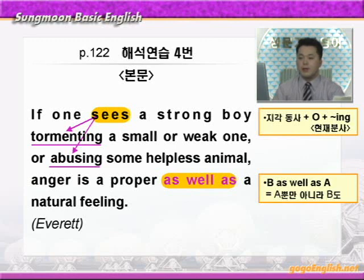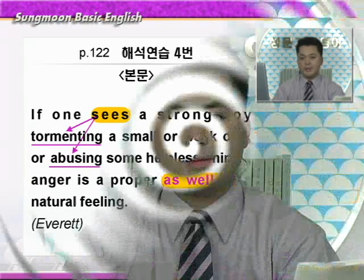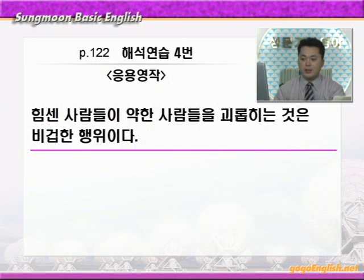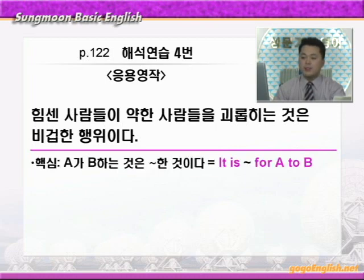정리해보죠. 힘센 소년이 작거나 약한 소년을 괴롭히거나 혹은 어떤 무기력한 동물을 학대하는 것을 보면, 분노가 일어나는데 그것은 당연할 뿐만 아니라 올바른 감정이다 — 이런 말이 되겠습니다. 그럼 응용영작으로 가겠습니다. '힘센 사람들이 약한 사람들을 괴롭히는 것은 비겁한 행위이다.' 이 영작의 핵심은 'A가 뭐뭐 하는 것은 뭐뭐 한 것이다' — 이런 말을 할 때 'it is 뭐뭐 for A to 뭐뭐' 이런 구문으로 나타내는 것이 되겠습니다.